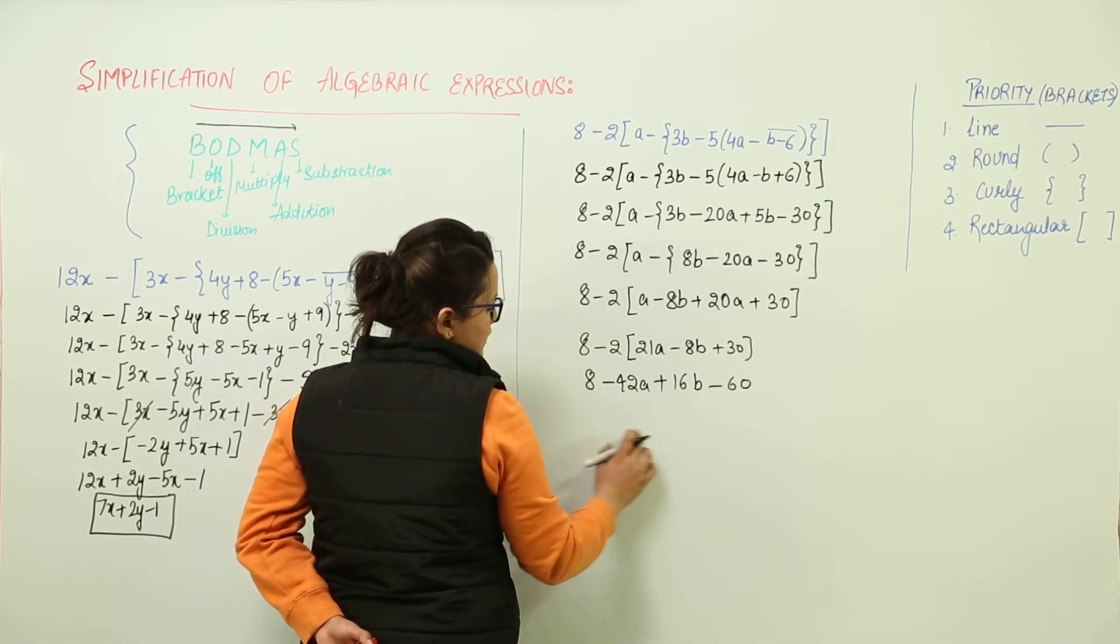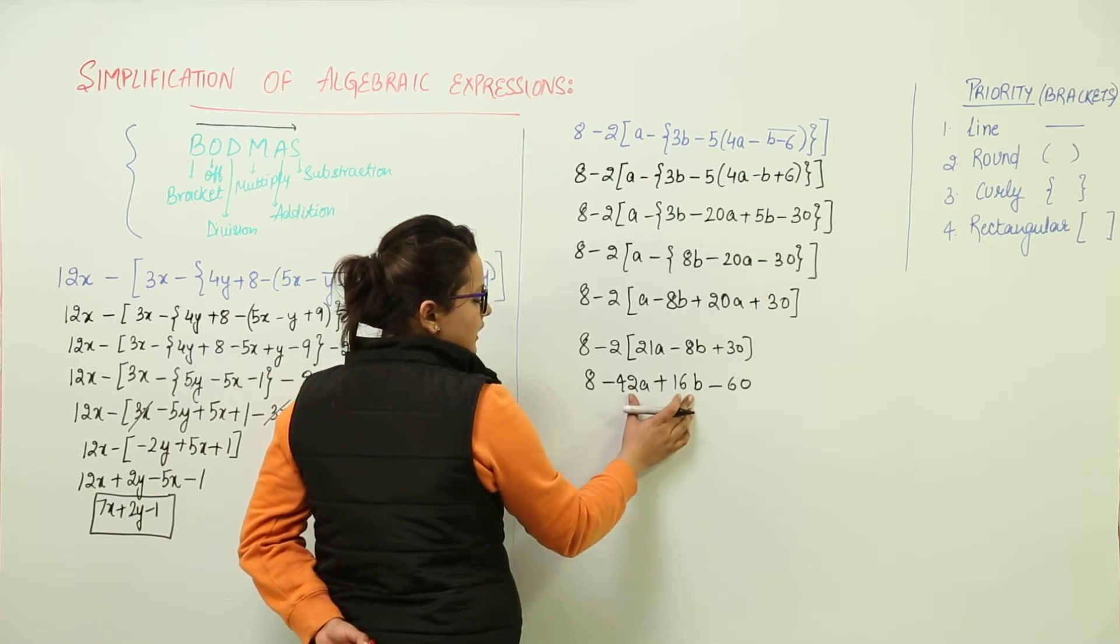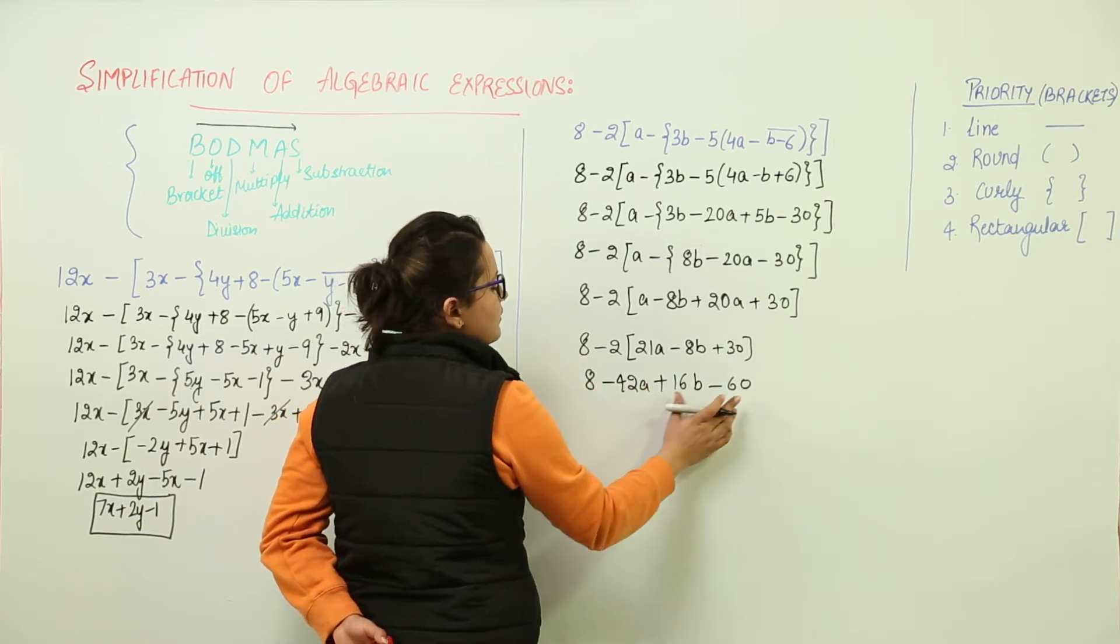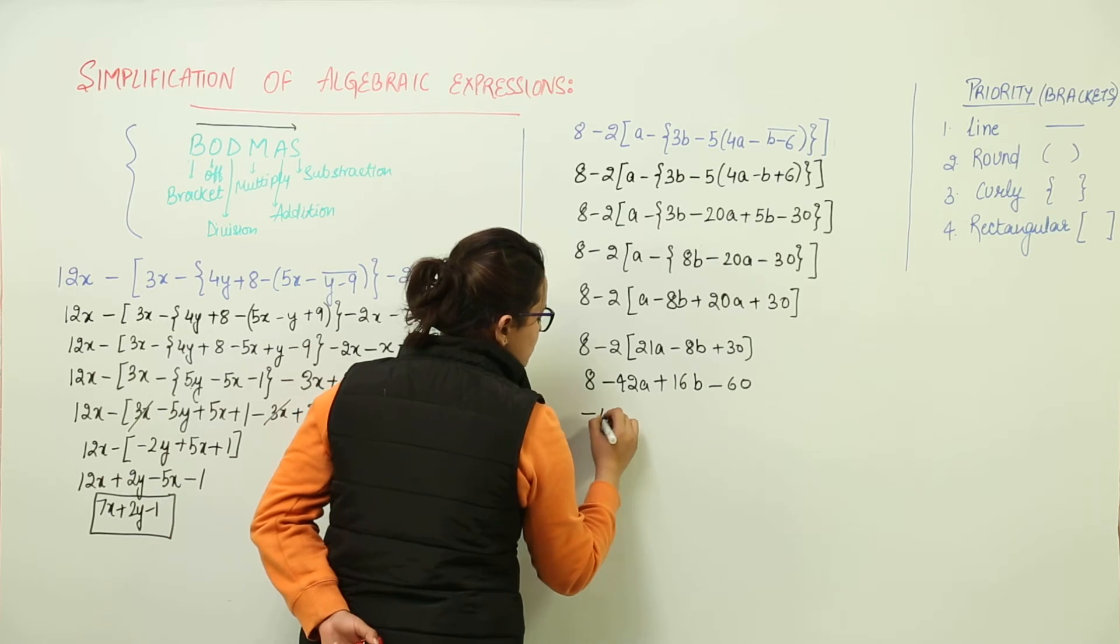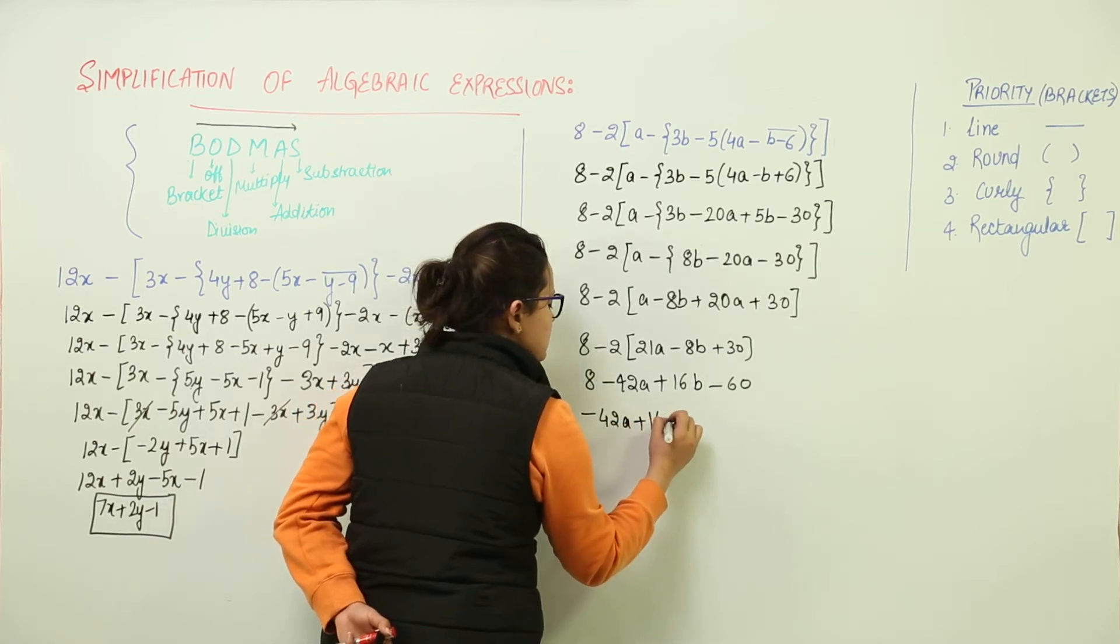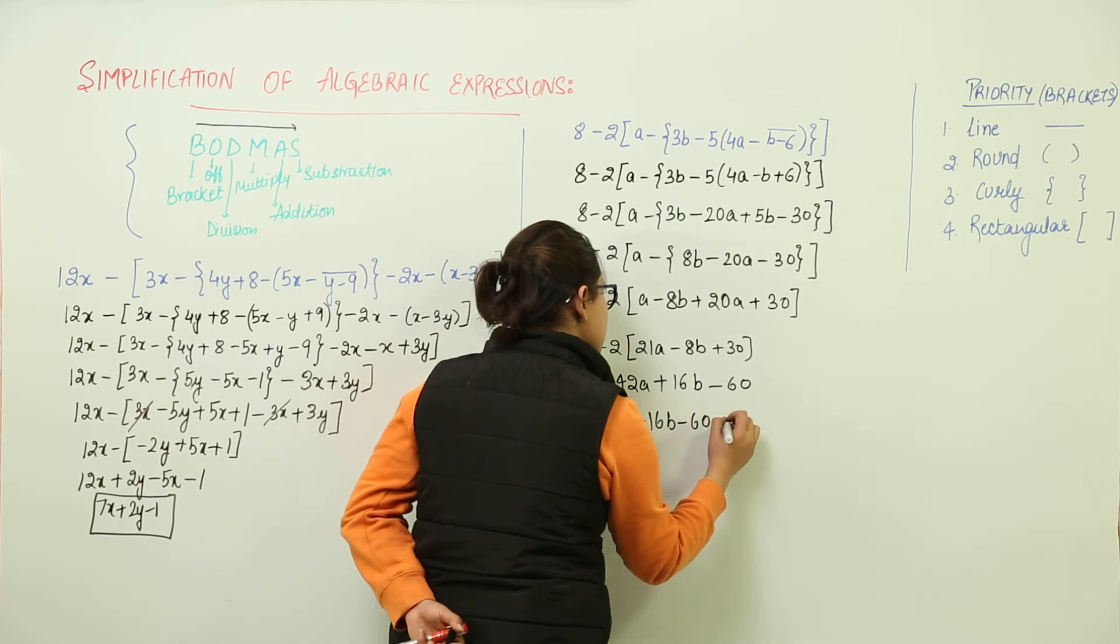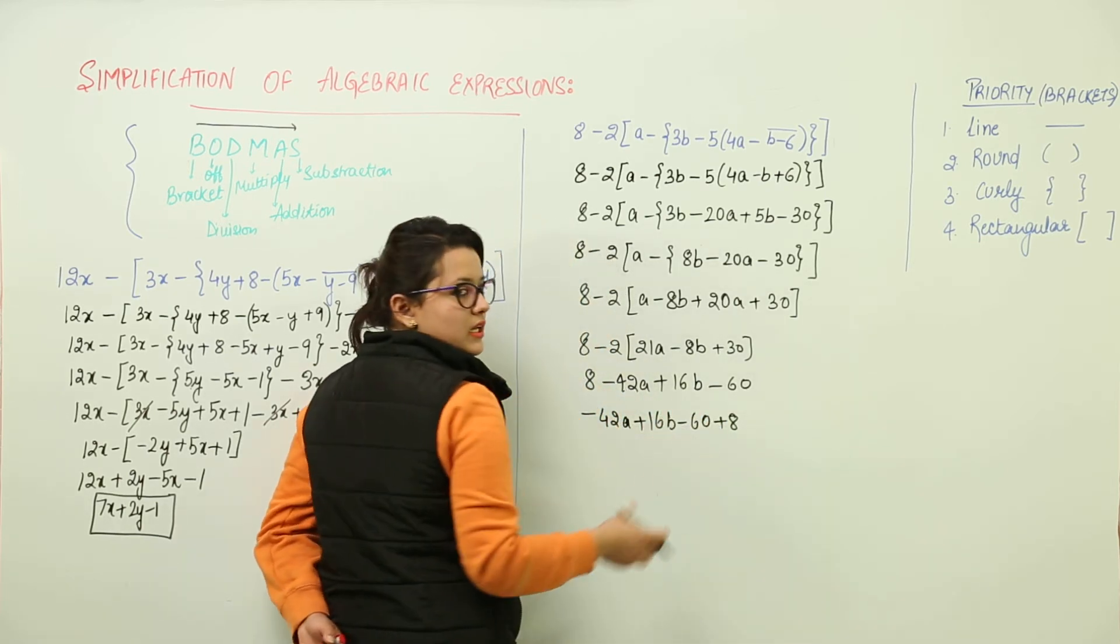So do we have any like terms? These are unlike terms but we can simplify plus 8 and minus 60. So we get minus 42a plus 16b plus 8. You can just group the like terms together.